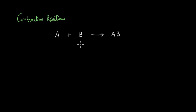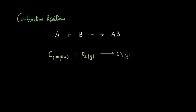One very common example of combination reactions is when one of the reactants is oxygen. So a lot of oxidation reactions are combination reactions. For example, carbon in graphite form reacting with oxygen to form carbon dioxide.